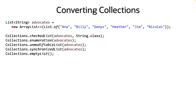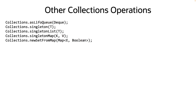Collections utility can also convert a collection to a different type. Checked will create a checked collection that will provide better guarantees against an incorrect type being added to the collection than provided by the generic system. Enumeration will return an enumeration instance of the passed in collection. Unmodifiable will return an unmodifiable view of the source collection. Changes to the source collection may show up in the view. Synchronized will return the thread-safe synchronized implementation of the collection. Note that these synchronized collections won't conflict with virtual threads as they are only guarding very fast in-memory operations. Collections can also generate an unmodifiable empty collection.